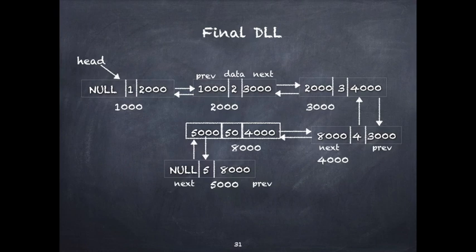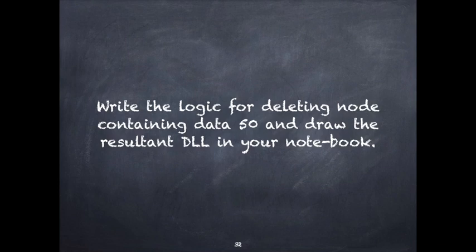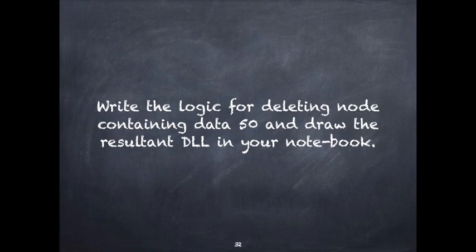Try the deletion of any random node by yourself. Write the logic for deleting the node containing data 50 and draw the resultant DLL in your notebook. With this we have completed the doubly linked list portion. A few assignment questions on this portion will be given as well.